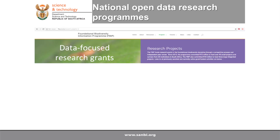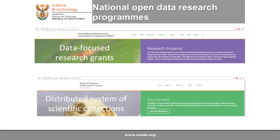Through the FBIP, you effectively get grants to do research, but the proviso is that the data coming out of that research must be open data. Secondly, the DSI also funds the Natural Science Collections Facility, which is assisting museums and herbaria throughout the country to start managing their collections better — a big part of which is digitizing their collections, so that we don't sit with the kind of disaster that a fire would result in.